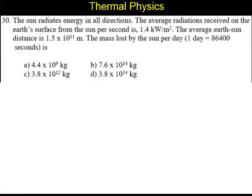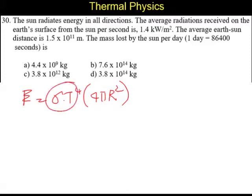To solve this, we need to know the solar constant and radiation loss. The energy radiated by the sun per second is σT⁴ into 4πr². Here, σT⁴ is the energy radiated by the sun per unit area. The average radiation received on the earth's surface from the sun per second is 1.4 kilowatt per meter square, so σT⁴ equals 1.4 kilowatt per meter square.